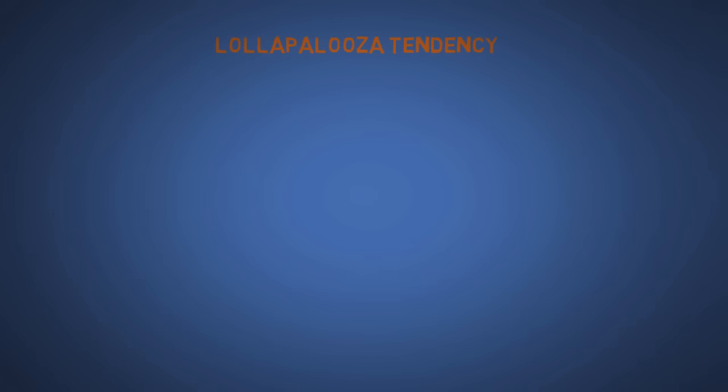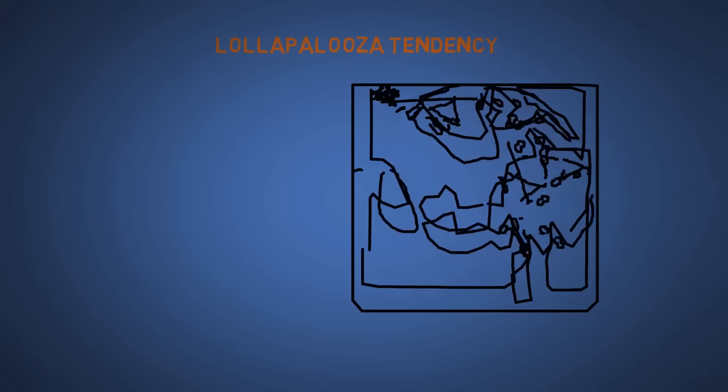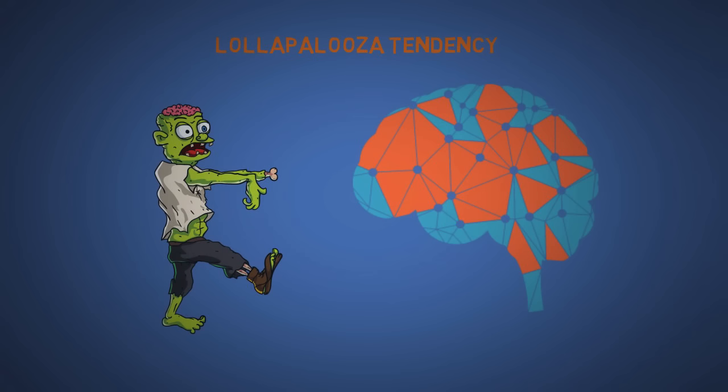The twenty-fifth and most important of all is the Lollapalooza tendency. This basically says if enough cognitive biases are activated at the same period of time, you'll become a helpless zombie.